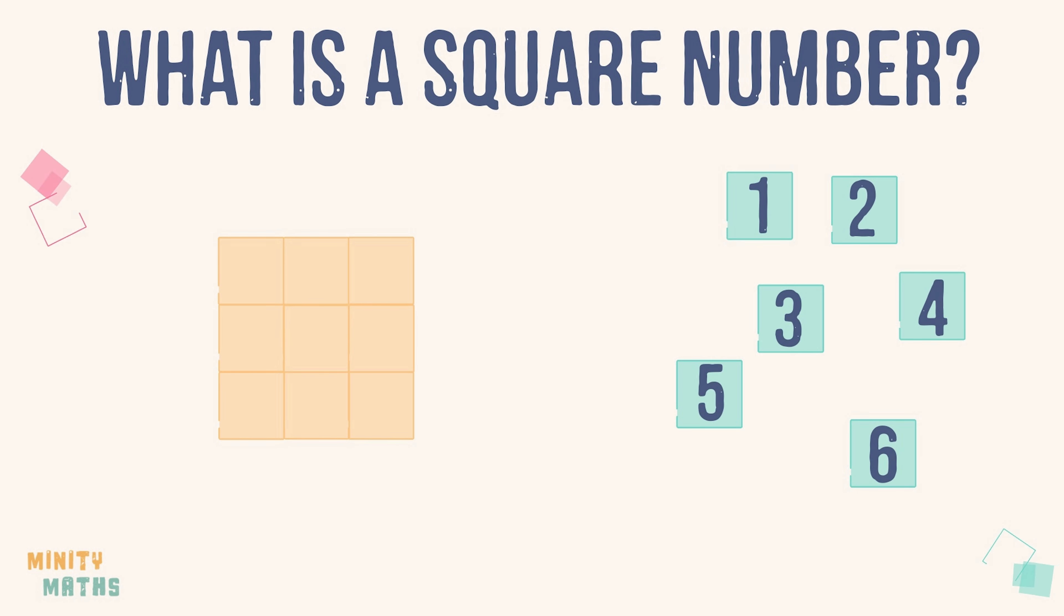But we cannot make a square out of 6 smaller squares, no matter how many different ways we try. Therefore, 9 is a square number, and 6 is not a square number.